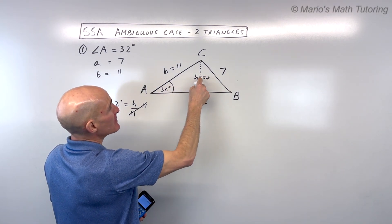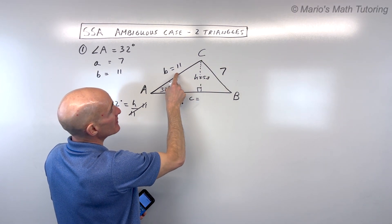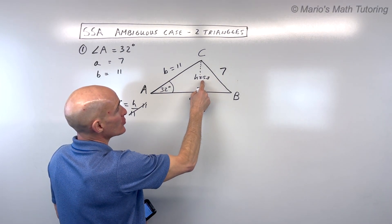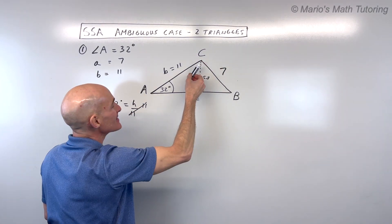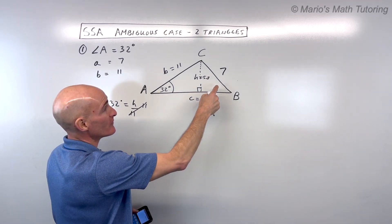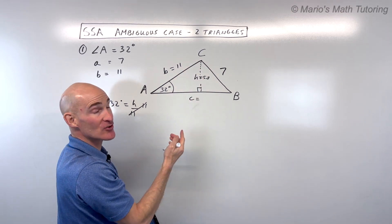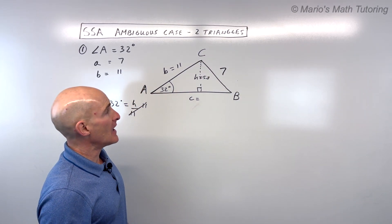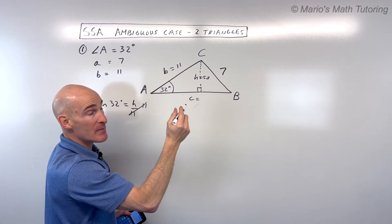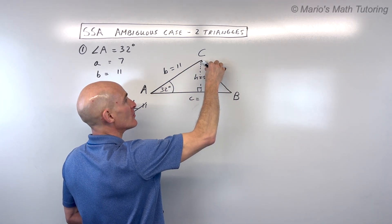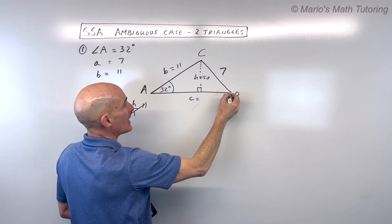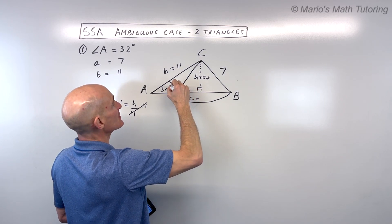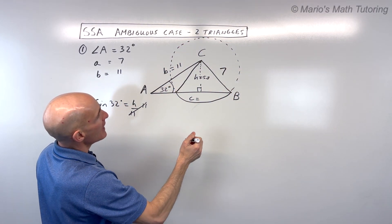Here's the key: when the side opposite the acute angle is between the altitude (5.8) and the adjacent side (11), you have two possible triangles. If the side were shorter than 5.8, it wouldn't reach — no triangle. If it were exactly 5.8, you'd get one right triangle. If it were longer than side B, only one triangle. But here, side A equals 7, which is between 5.8 and 11, so we can rotate it to intersect in two places, giving two triangles.